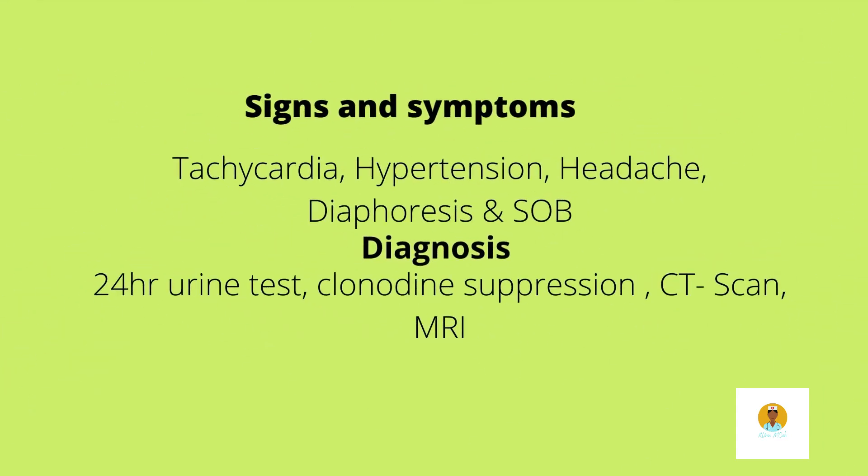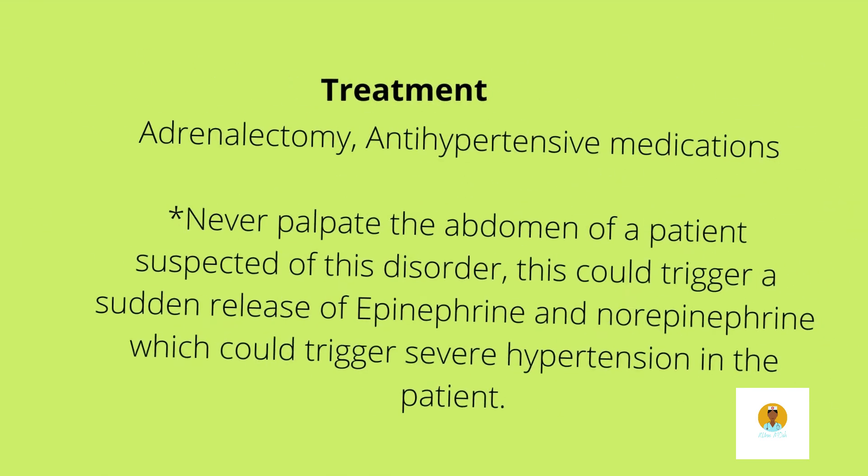Signs and symptoms include tachycardia, headache, hypertension, diaphoresis, and shortness of breath. For diagnosis, we can perform a 24-hour urine test where we test for the byproducts of the elevation of norepinephrine and epinephrine. We can also do a clonidine suppression test, or an MRI or CT scan to identify if the patient has a tumor.